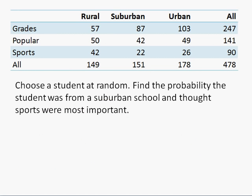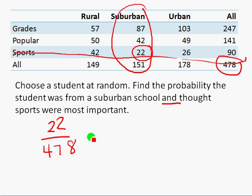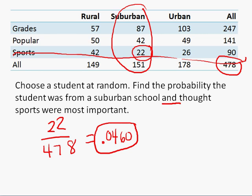We pick a student at random and find the probability that a student was from a suburban school and thought sports were the most important. This is an AND — not a conditional probability. So we're finding the people who were suburban students who thought sports was most important. That intersection gives us 22 students out of the total 478. So for the AND, it's 22 out of 478, which is .0460, or 4.6%.